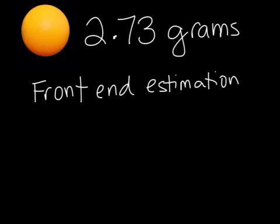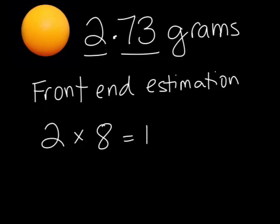We would simply take 2.73 and ignore the numbers behind the decimal. So, rather than 2.73 grams, we would say that the approximate mass of the ping-pong ball is 2 grams. Then we would multiply that by 8 to get 16 grams.